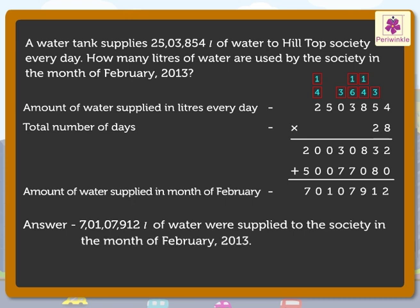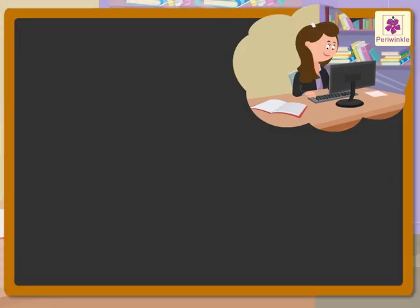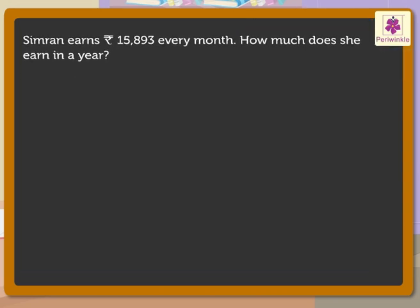Let us solve one more multiplication story. Simran earns 15,893 rupees every month. How much does she earn in a year? Here we need to ask the questions: what is 15,893 and what is 12, to write the statements.